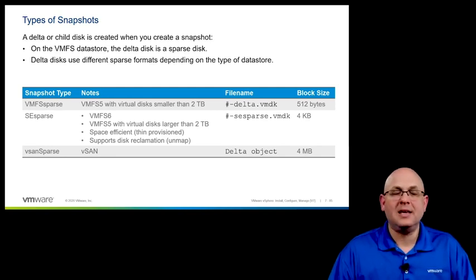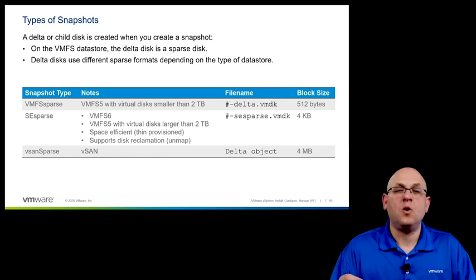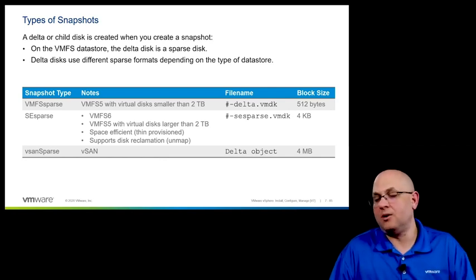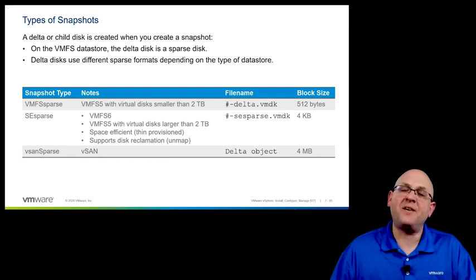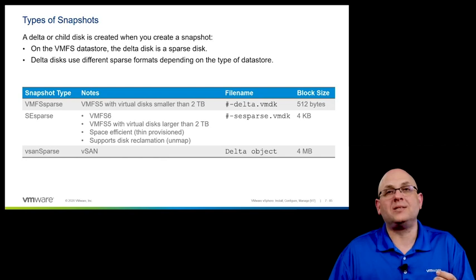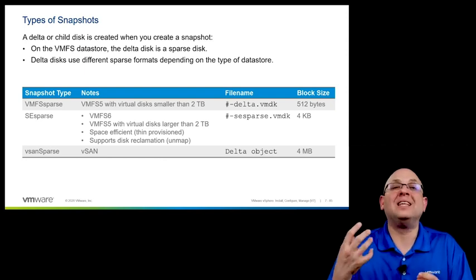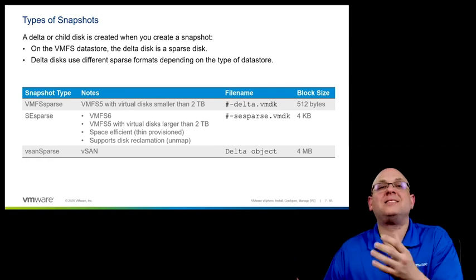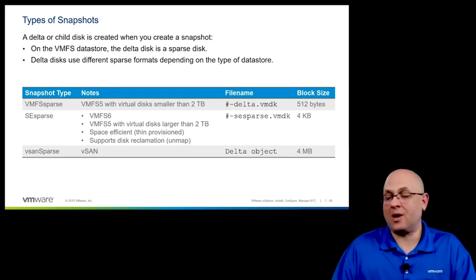There are a number of different types of snapshots in the vSphere infrastructure, and the type depends on a couple of factors. The first type is called a VMFS sparse snapshot, used with VMFS file systems where virtual disks are smaller than two terabytes — in this case we have a delta VMDK file with a 512-byte block slice. When we have VMFS 6, or VMFS 5 datastores where virtual disks are larger than 2 terabytes, we have an SE sparse snapshot — a space-efficient thin-provisioned disk that supports disk reclamation, where deleting files from the snapshot delta causes the delta file to actually shrink. These SE sparse VMDKs use a 4-kilobyte block size.